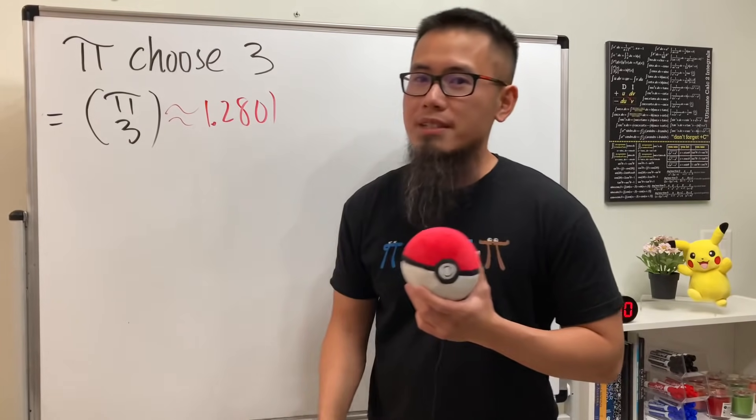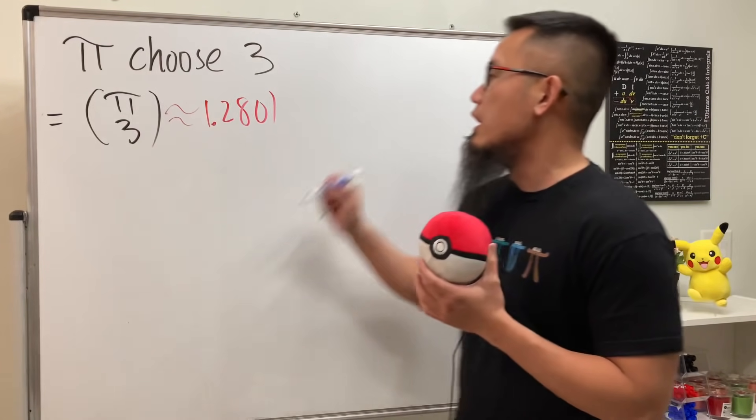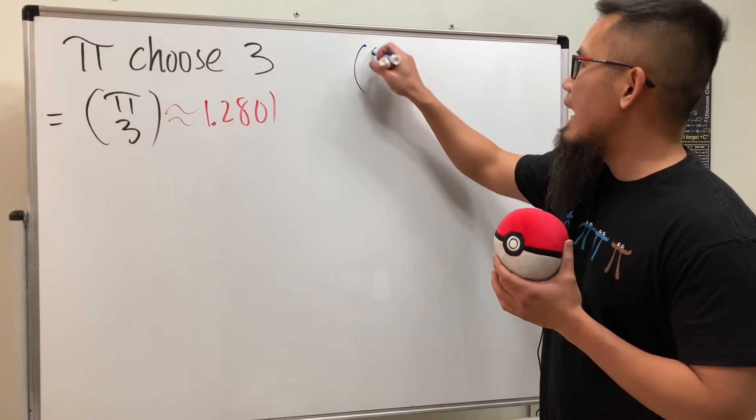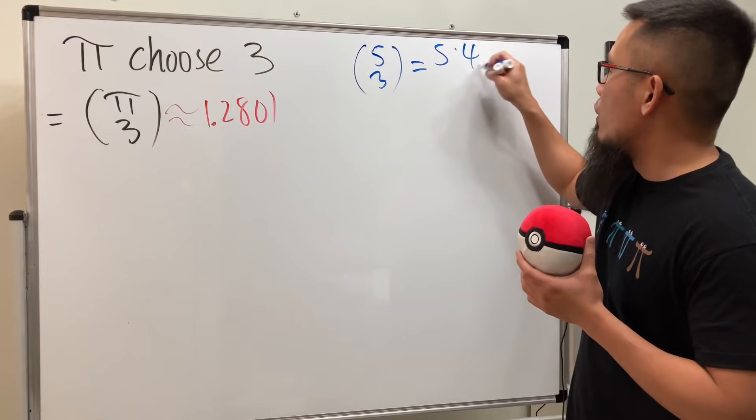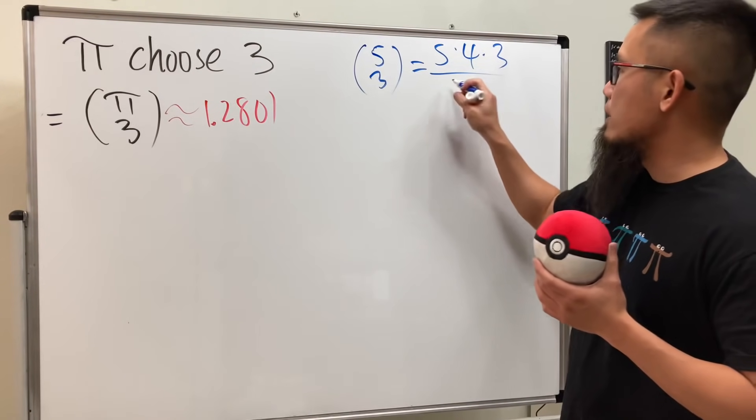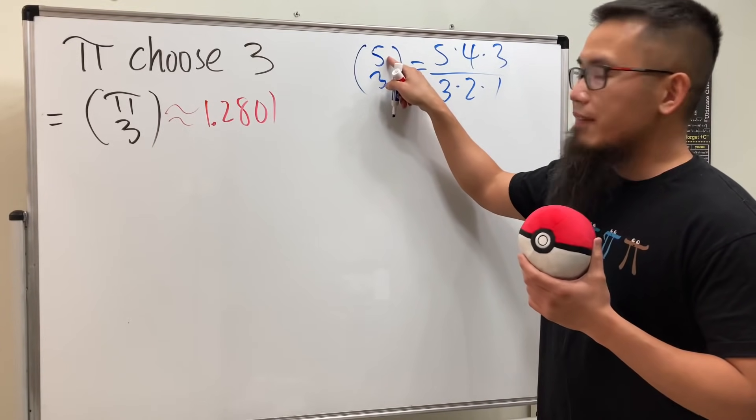Remember this right here is called the binomial coefficient and in fact works if you have any real number right here. Check this out: if you have let's say five choose three, well how do we do this? Yes, we start with five and multiply by four times three like this, and divide it by three factorial, so three times two times one like this.